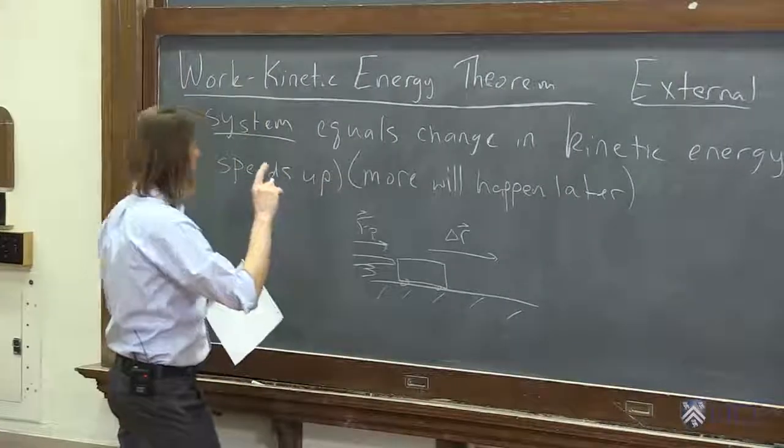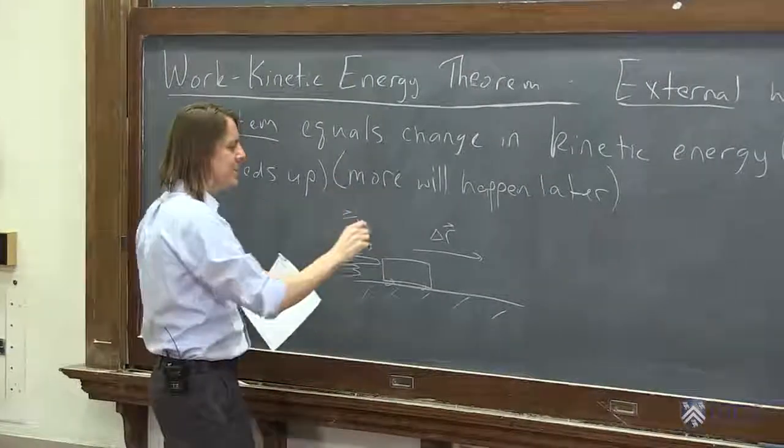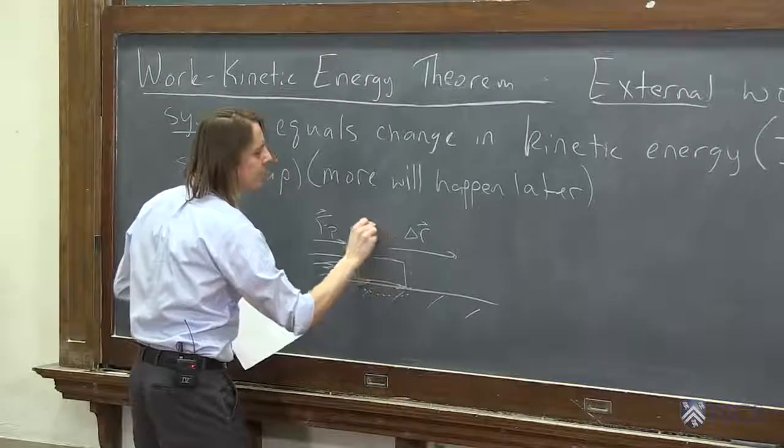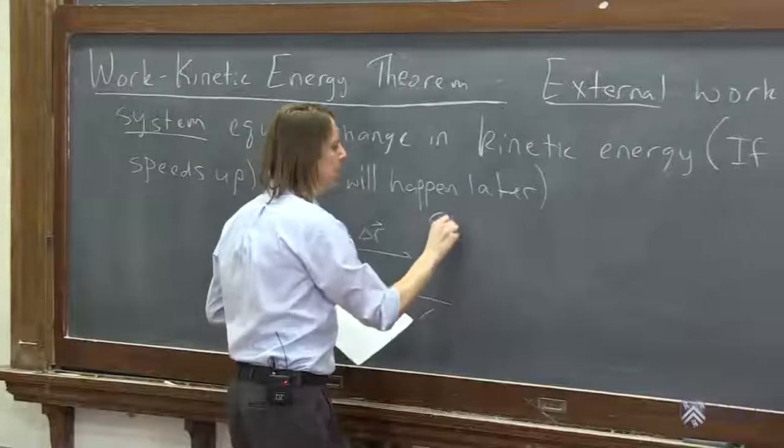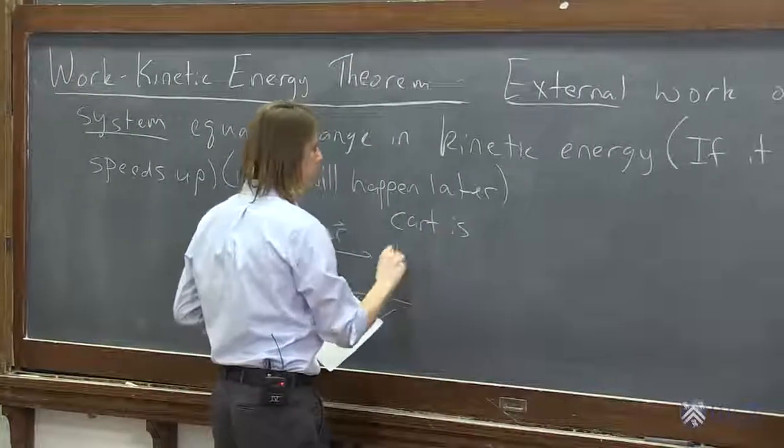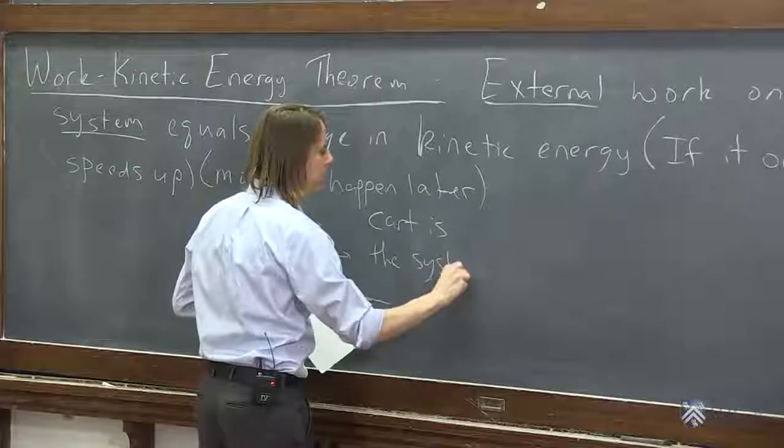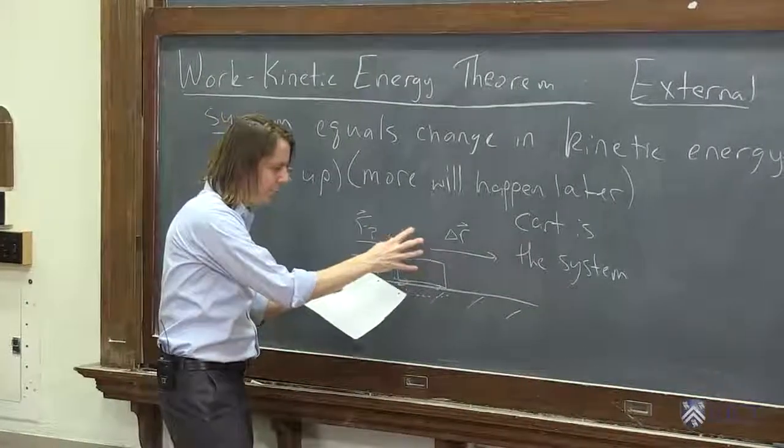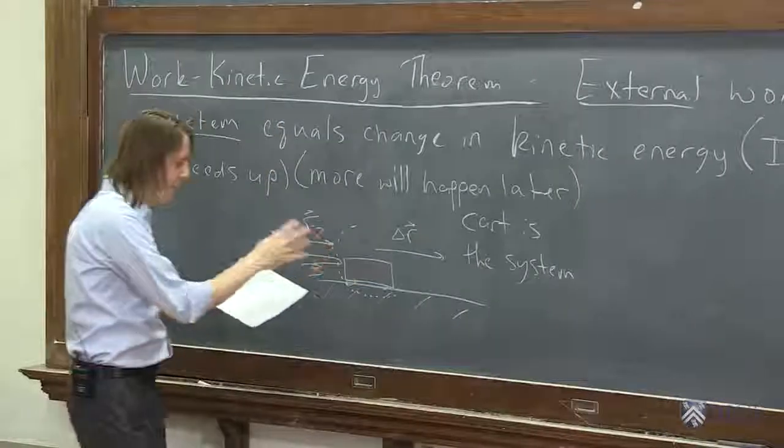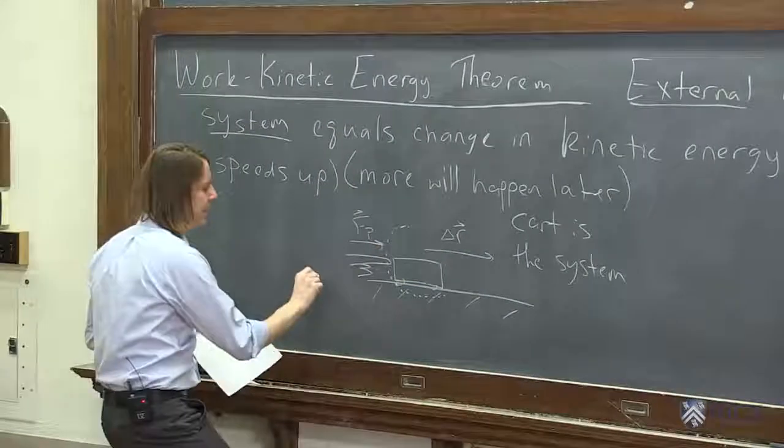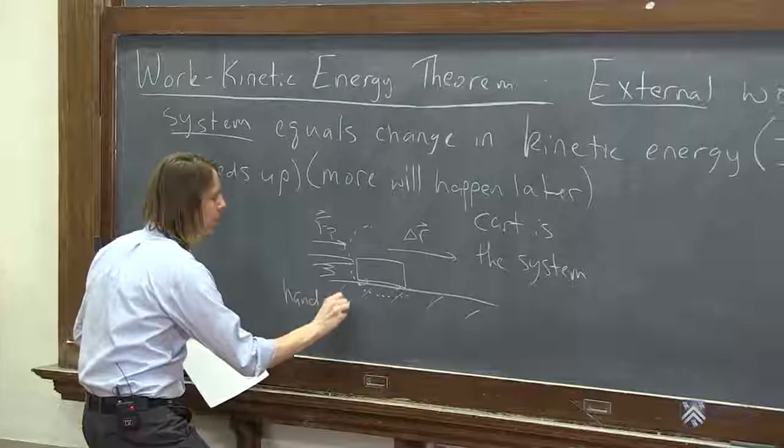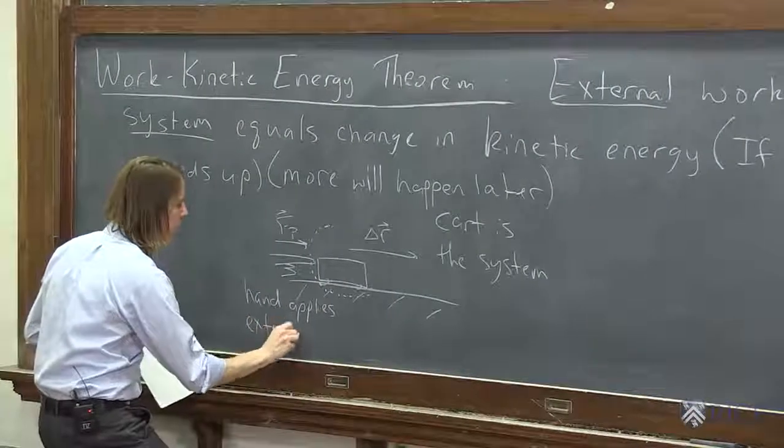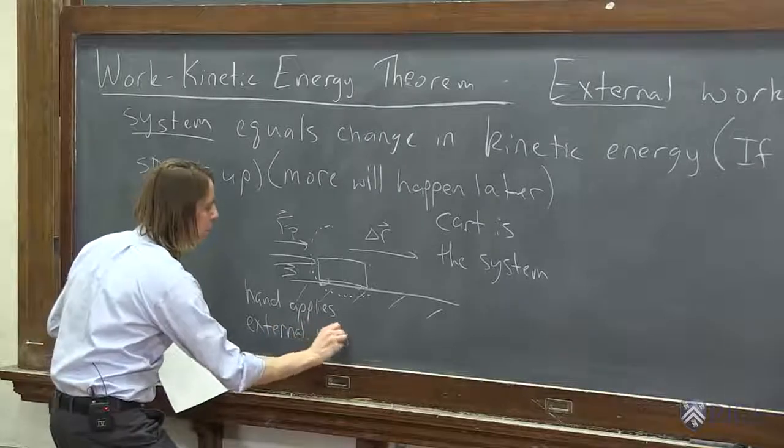External and system. So in this case, the system, the way we're going to analyze it, the system is the cart. The cart is the system. Just that object. This little dashed line that defines the system moves with the cart. And in this case, my hand applies external work.